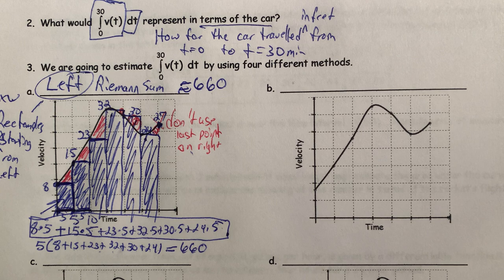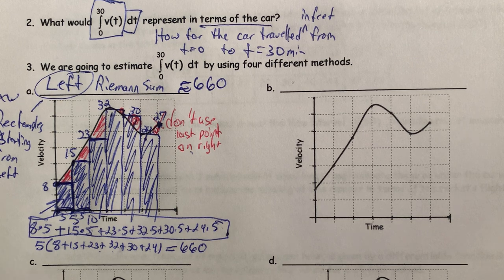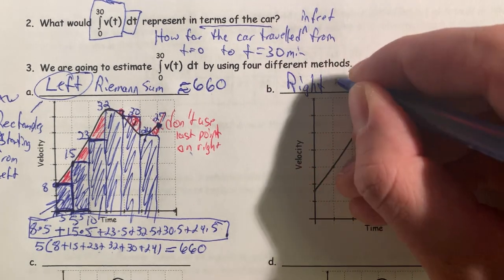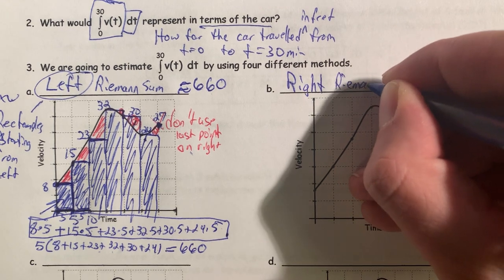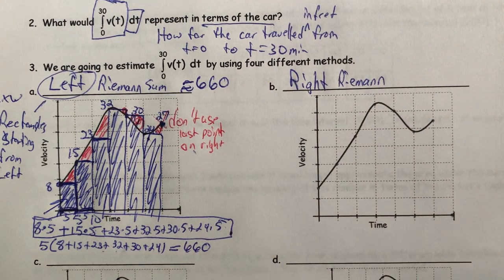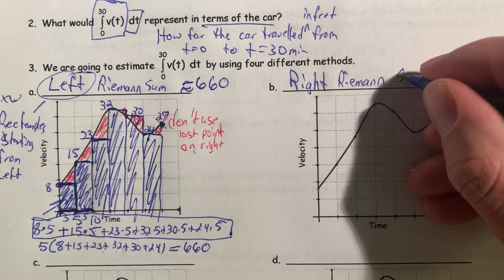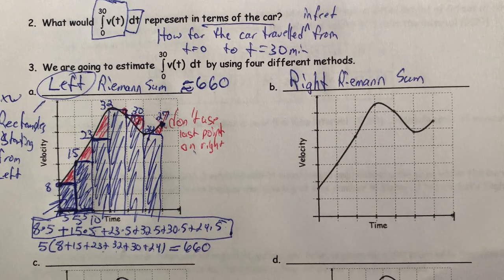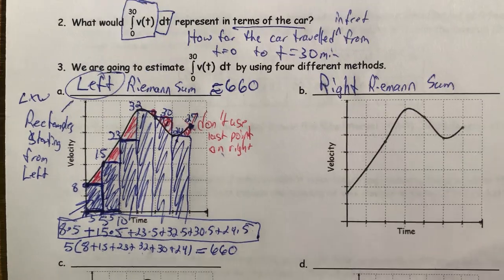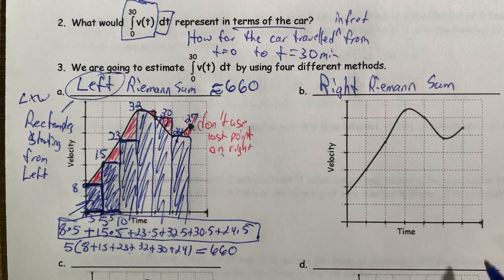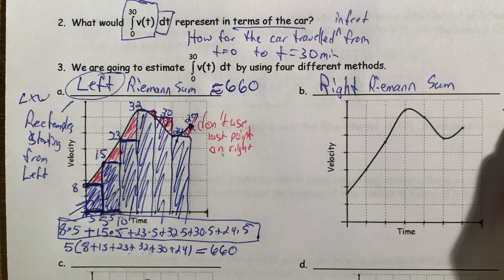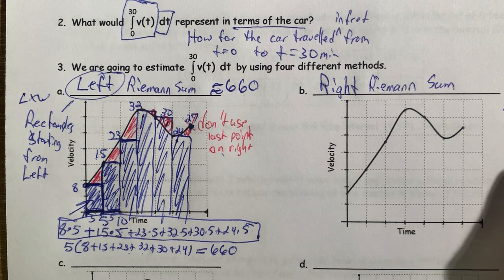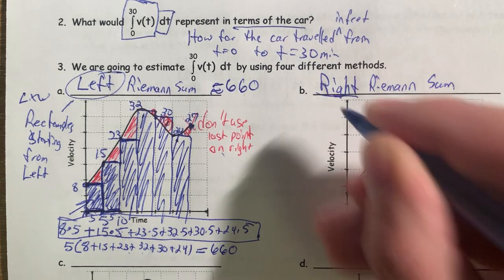Our next method — you might want to guess — is going to be a right Riemann sum. It's also an appropriate estimate, and I bet you can guess how this one works. It will be rectangles, just like before, but this one will start from the right because it's a right Riemann sum.